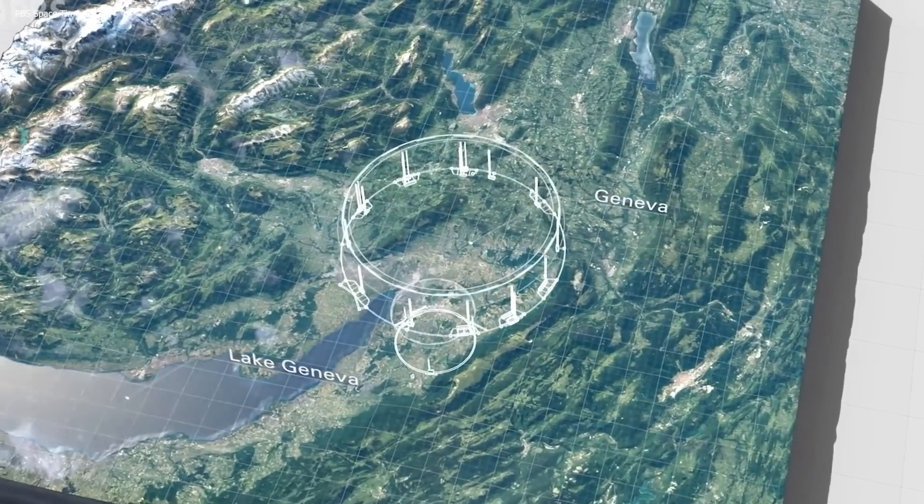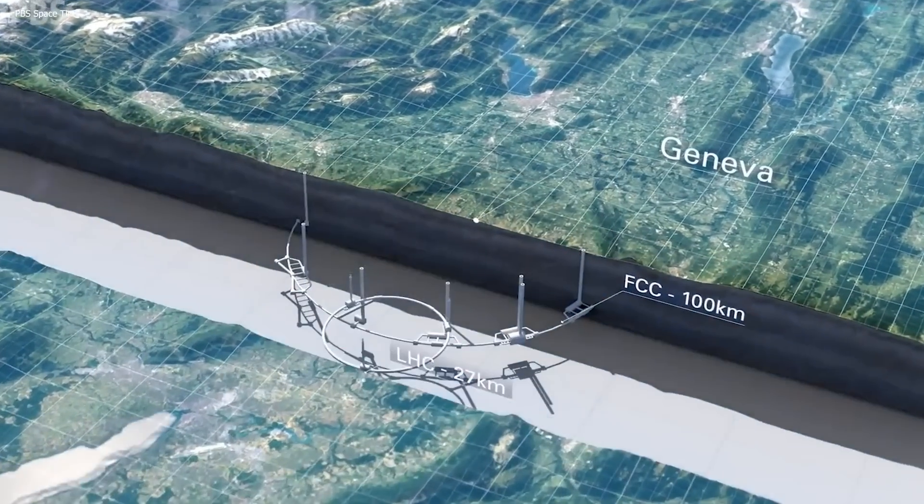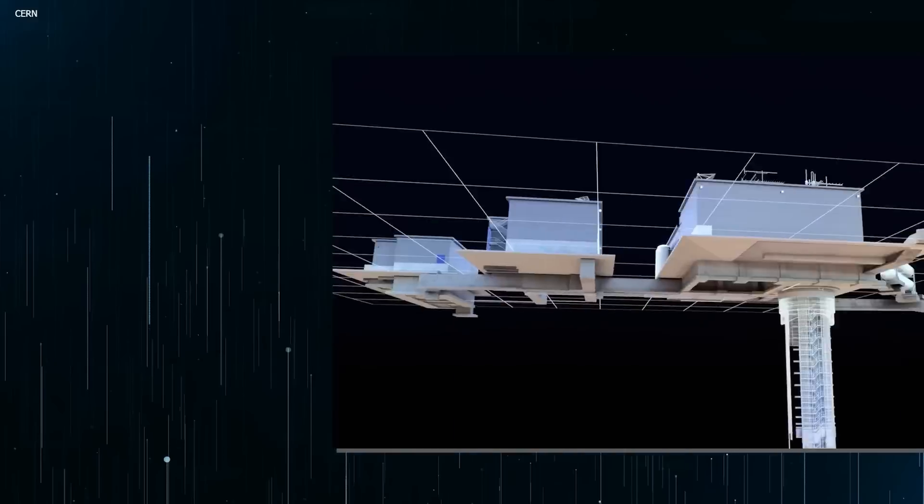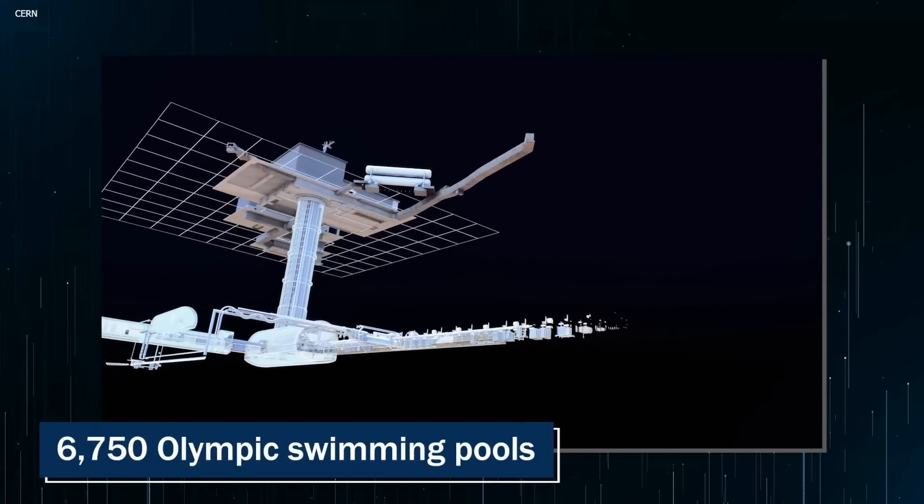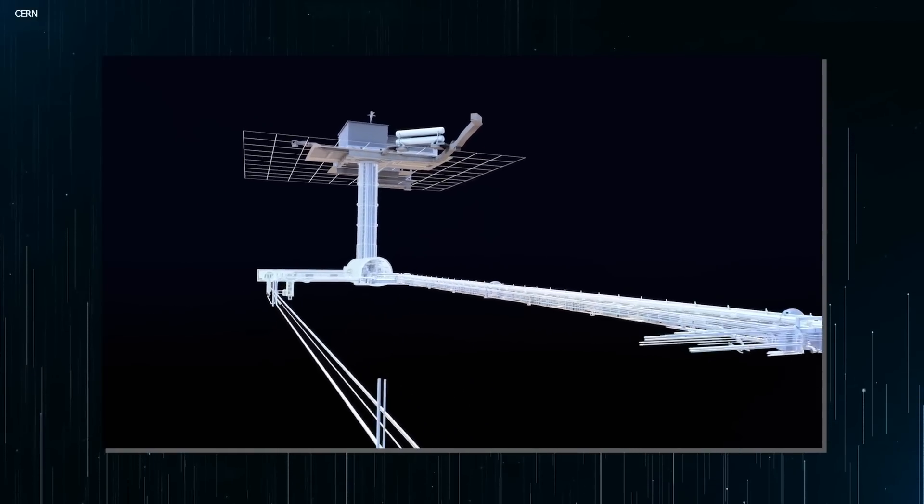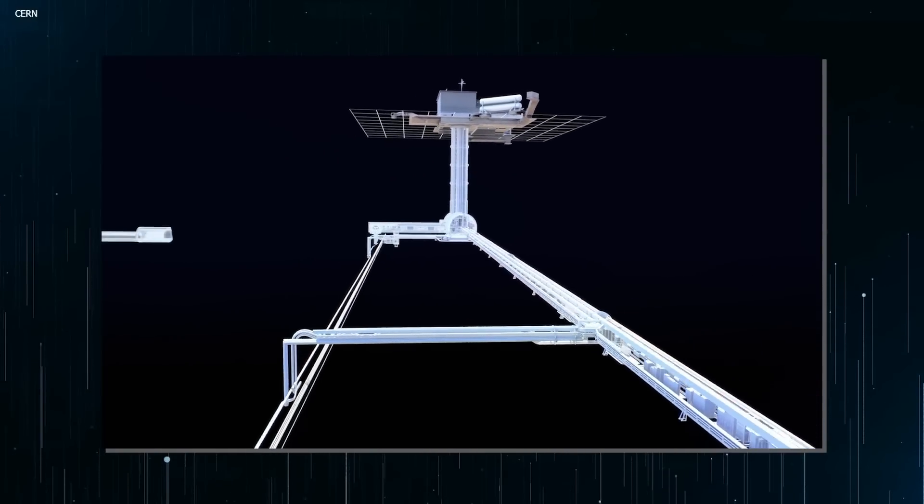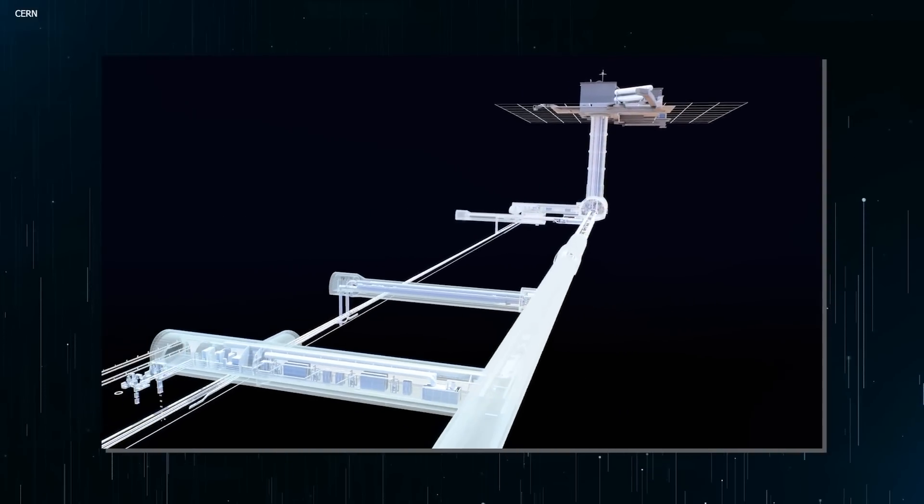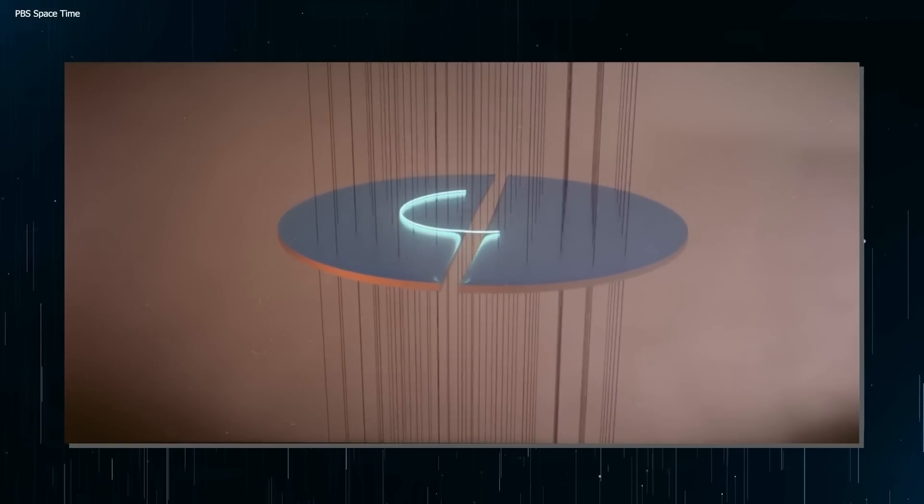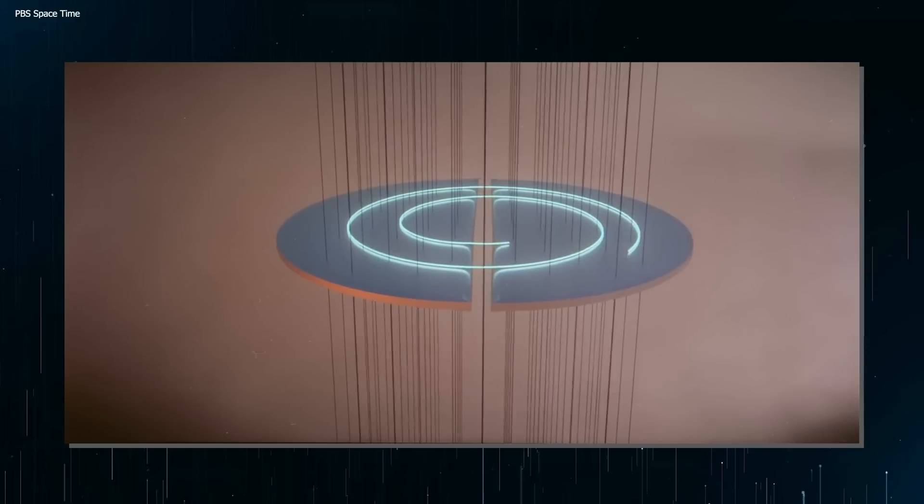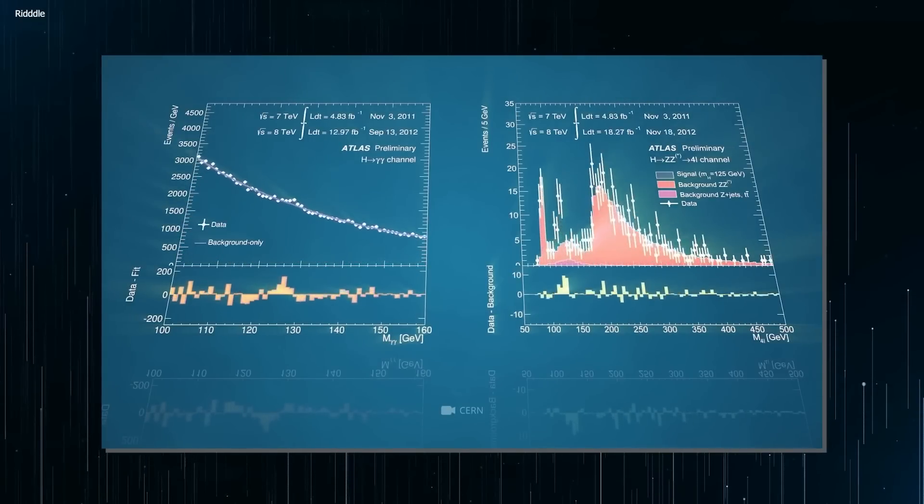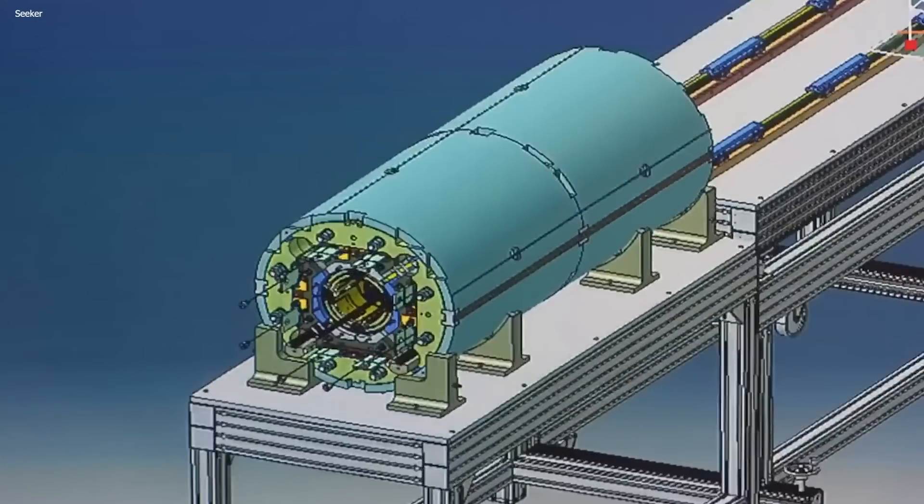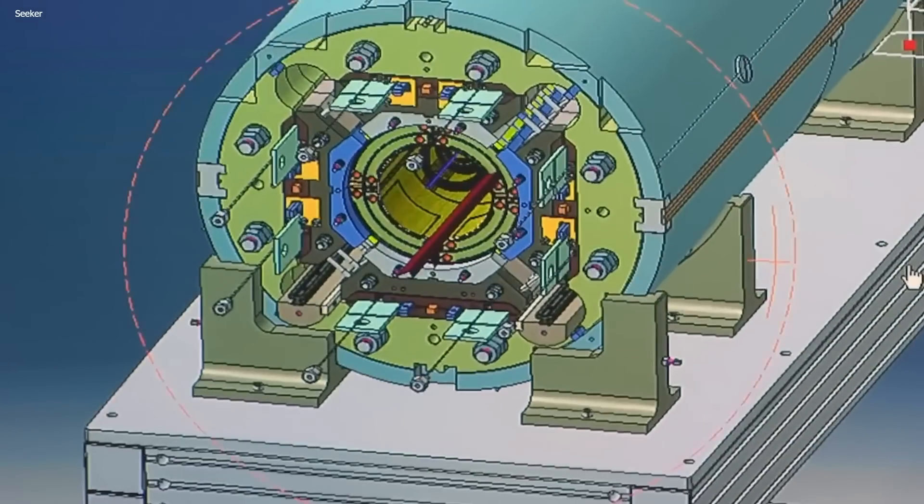First off, let's talk about the sheer size of this thing. The LHC is a circular tunnel that's 27 kilometers in circumference, buried beneath the Swiss-French border. That's about the length of 6,750 Olympic swimming pools laid end-to-end, and don't even get started on the amount of energy it takes to run this behemoth. The LHC consumes enough electricity to power a small city, which is why it has its own dedicated power station.